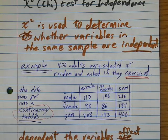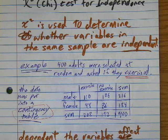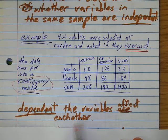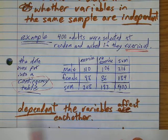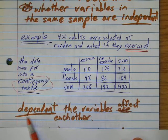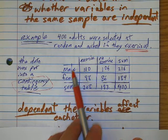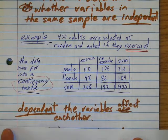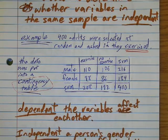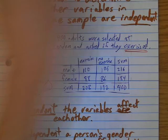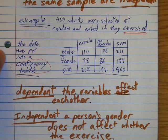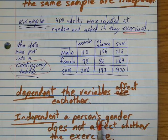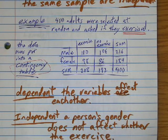So dependent variables are variables that affect each other. So basically, if we called this independent, then we would mean that a person's gender affects whether or not they exercise. And if the data is independent, then that means a person's gender does not affect whether they exercise.